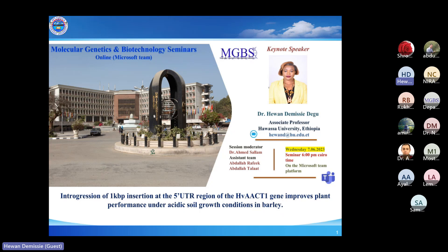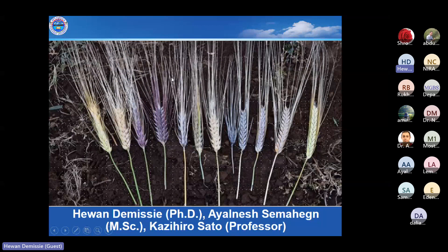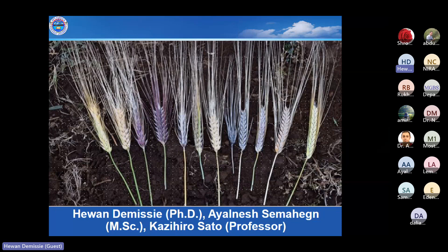Thank you very much, Dr. Abdella, for your humble and nice introduction. I will go directly to my presentation. This is about integration of a one kilobase pair insertion at the five prime UTR region of the HVS gene that improves plant performance under acidic soil growth conditions in barley. This work is a collaboration with Okayama University, Institute of Plant Stress and Resource, with Professor Sato, and one of my master's students who is now a graduate assistant at Njibarra University in northern Ethiopia.